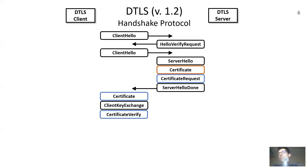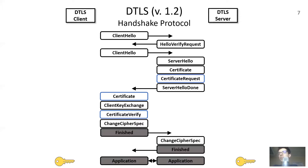The client additionally supplies a certificate verify message by which it proves to the server ownership of the certificate it has sent earlier. The handshake ends with both sides sending change cipher spec and finished messages to each other. With the handshake complete, the two sides can begin exchanging application data securely using the newly negotiated keys.